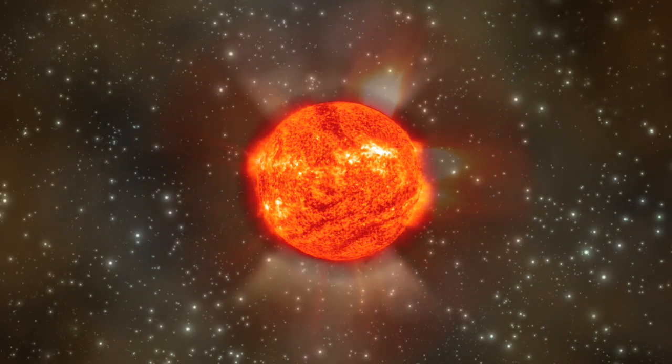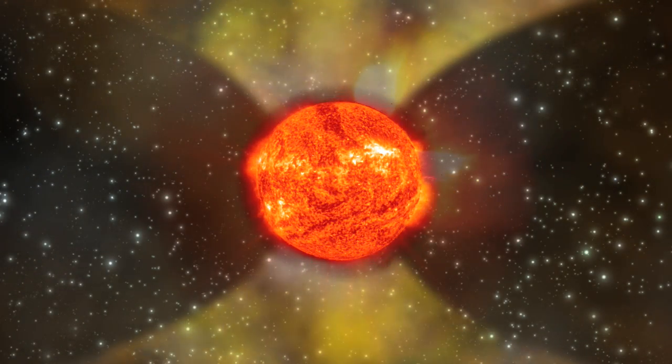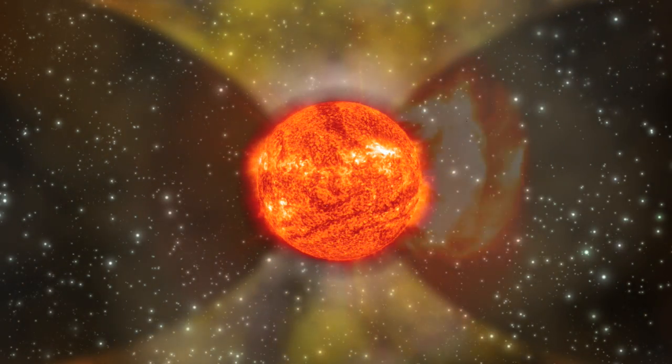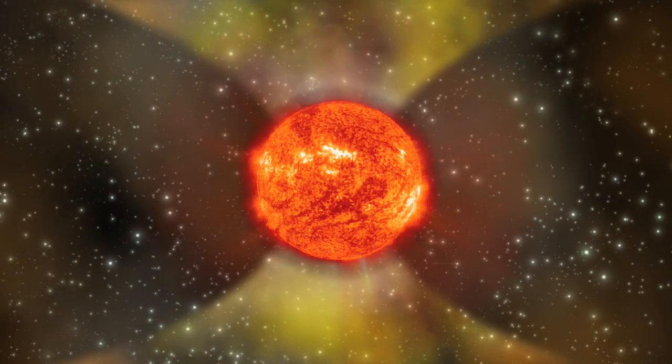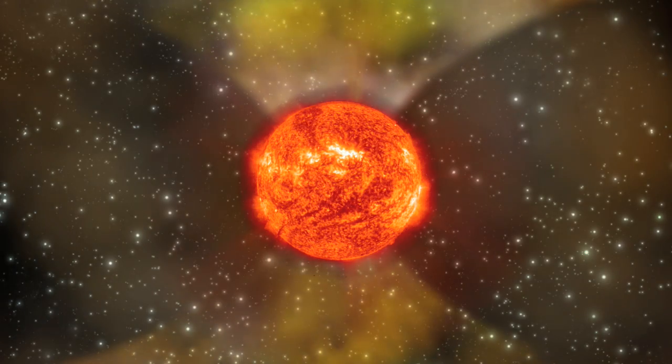It also observed the fast solar wind flowing from funnel-shaped magnetic fields that pass through coronal holes, areas of the solar corona that are cooler and lower in density.